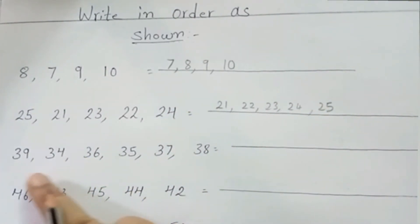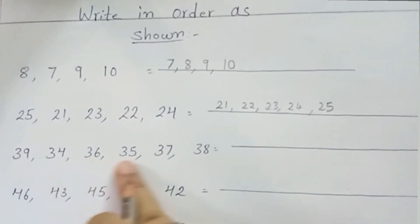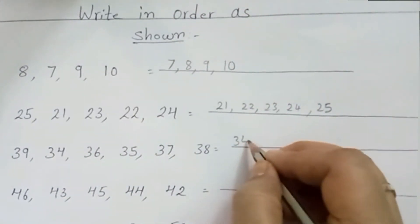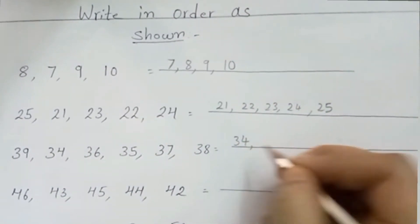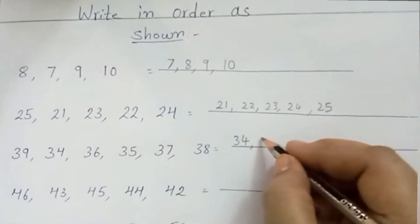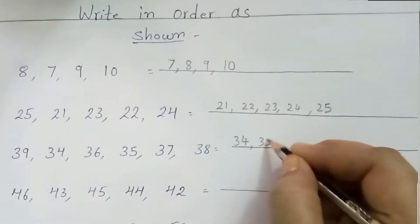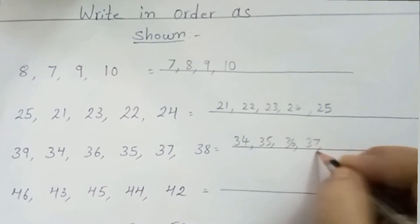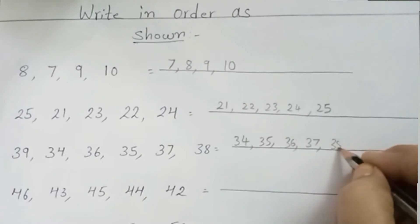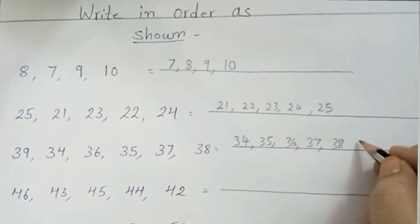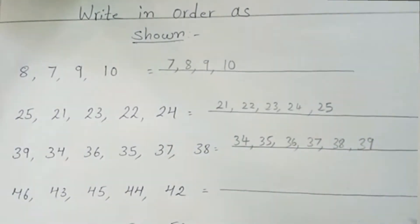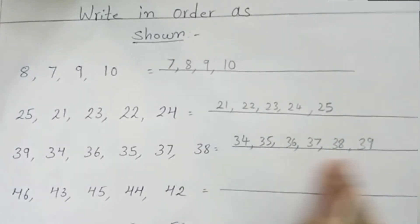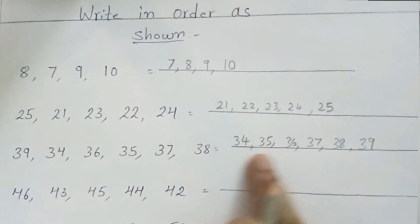Third line. Which is the smallest number children? 34. So you have to write here 34, then 35, 36, 37, 38, and 39. Understood children? So you have to write small to big.